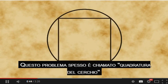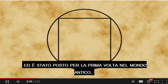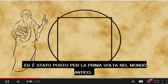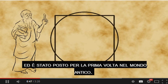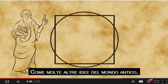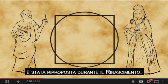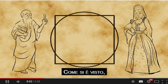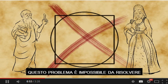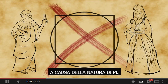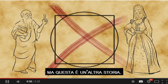This is a problem often called squaring a circle, first proposed in the ancient world, and like many ideas of the ancient world, it was given new life during the Renaissance. As it turns out, this problem is impossible to solve because of the nature of pi — but that's another story.